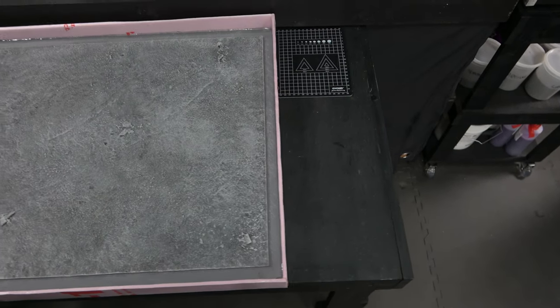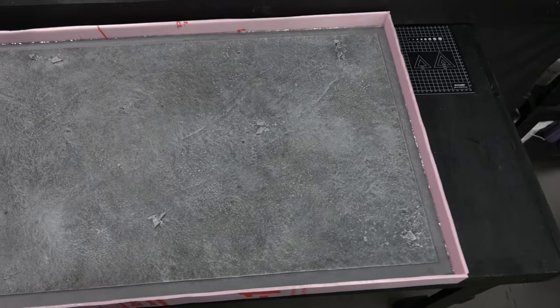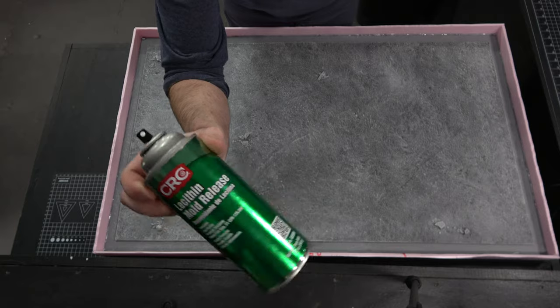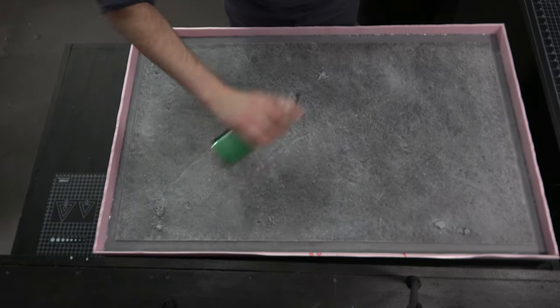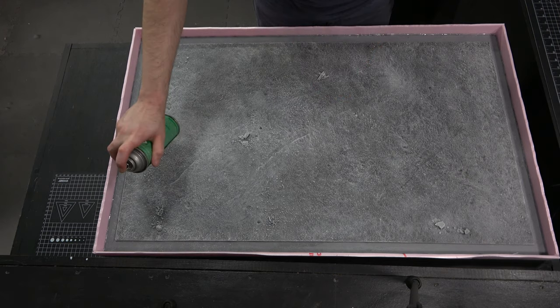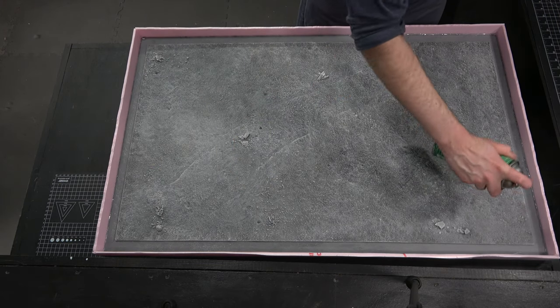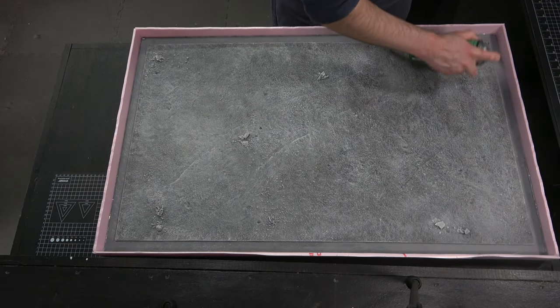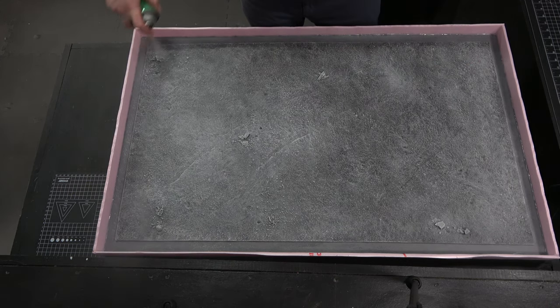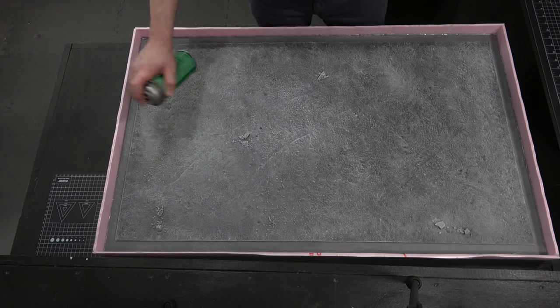Alright, I've got everything dammed up. I've got a bead of glue everywhere, everything's watertight or silicone tight. Now I'm gonna be going with some mold release here, just spraying a light coat over the entire surface. Making sure I get everything pretty well. You really don't want to overdo it with this stuff, and before you pour your silicone you do want to make sure that it's dry.